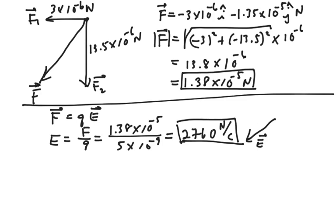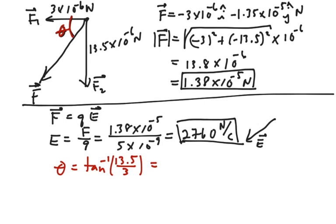The direction of both the field and the force is determined by this angle. That angle is going to be the inverse tangent of the y over the x component: 13.5 over 3, with the 10⁻⁶ units canceling. That inverse tangent gives us 77.5 degrees below the negative x-axis. So this angle theta is 77.5 degrees.